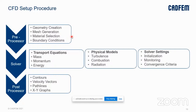After preprocessing, the second step is the solver setup. This includes the selection of transport equations — like turning on the energy equation to account for heat transfer. If you don't have heat transfer, there is no need to solve the energy equation. This also includes selection of physical models like turbulence, combustion, and radiation, and finally the solver settings for initializing, monitoring, and setting the convergence criteria.